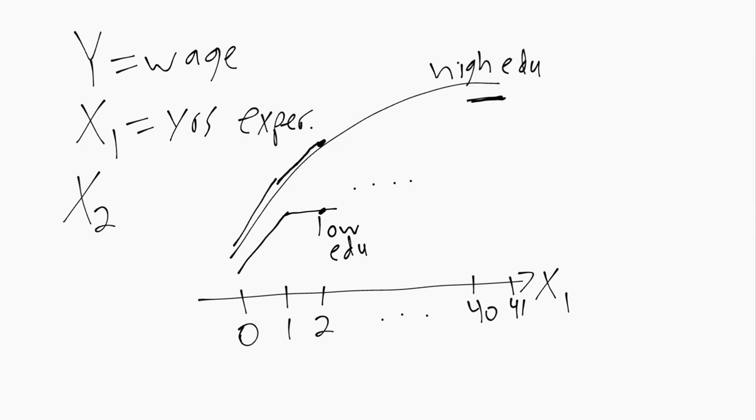If X2 is our years of education, we'd imagine this slope with respect to X1 also depends on X2. Or in other words, there's an interaction term, or there should be an interaction term, which is something the linear in variables model does not have.